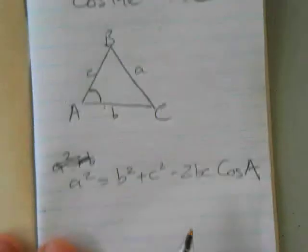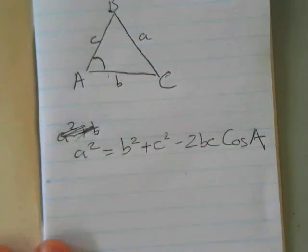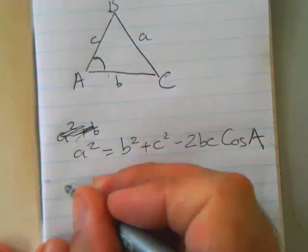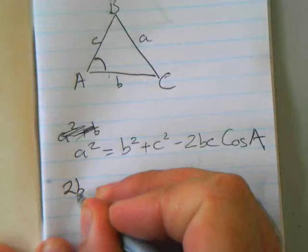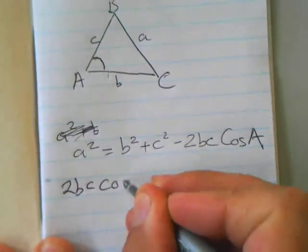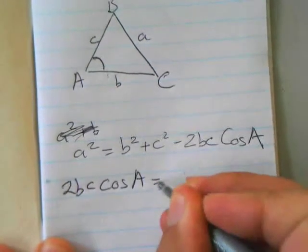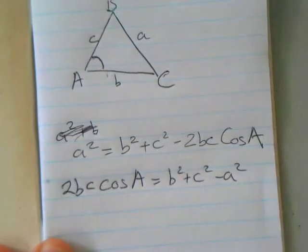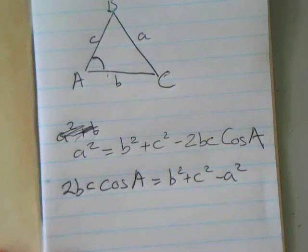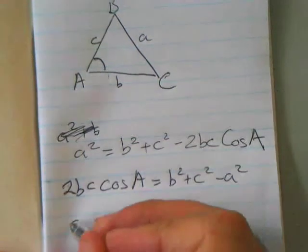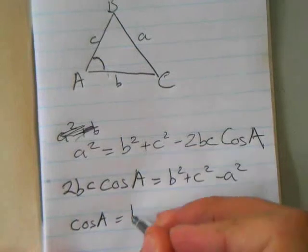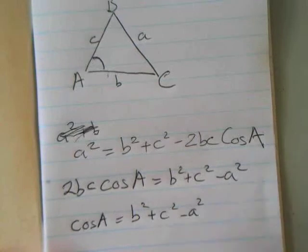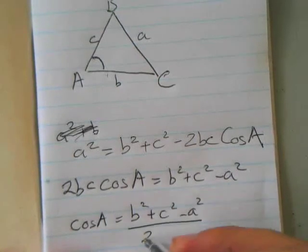And we're going to just use this formula. And all we're going to do is a bit of rearranging. So, we can now say that 2bc cosine A equals b squared plus c squared minus a squared. Let's just rearrange things. So, cosine A equals b squared plus c squared minus a squared divided by 2bc.